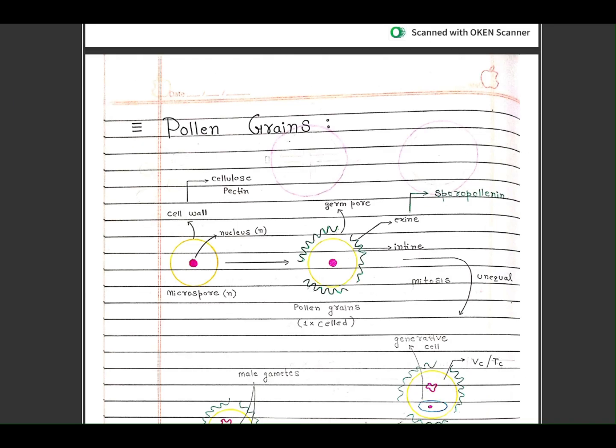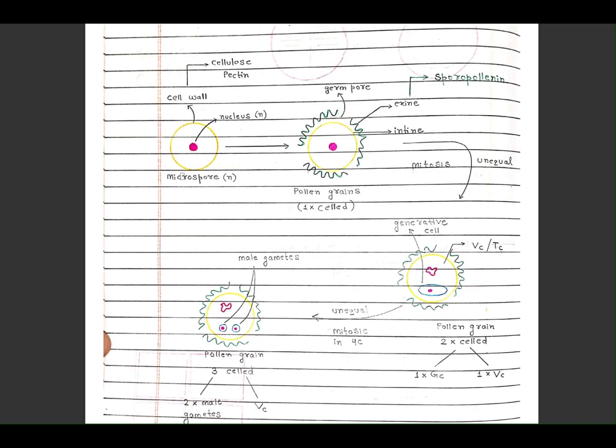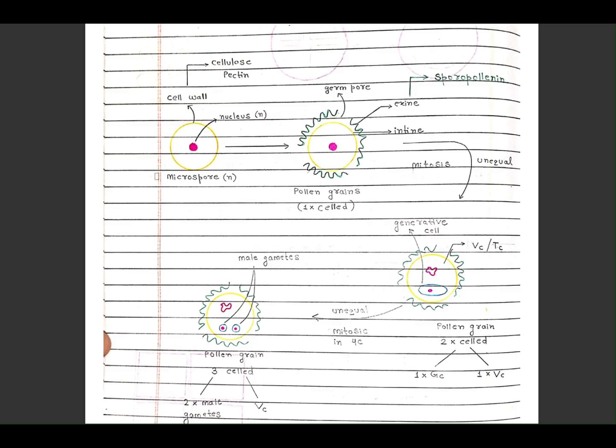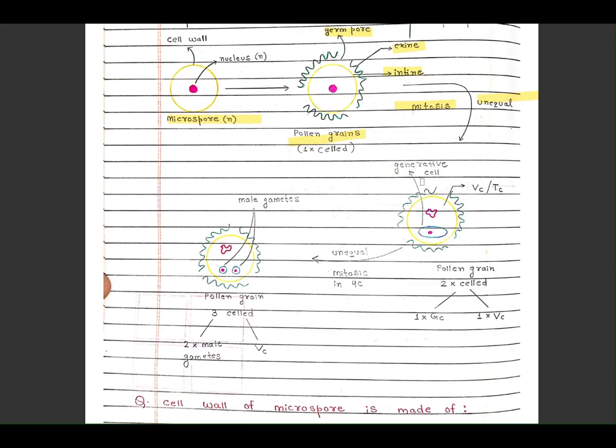Next topic is pollen grains. Microspore develops into pollen grain with germ pore, exine, intine. Mitosis occurs unequally forming generative cell. Here unequal mitosis occurs, then male gametes form. Pollen grain has 3 cells: 2 male gametes and one vegetative cell.